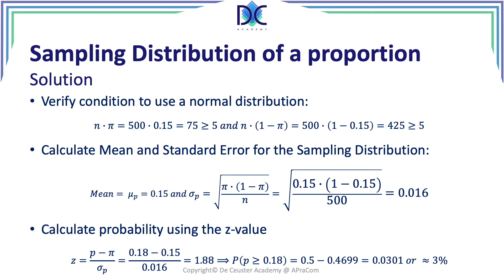We find that that probability is about 3%. So that means we can estimate there is a 3% probability that products sent to distributors will have 18% or more damages on the order. That was it for this video.